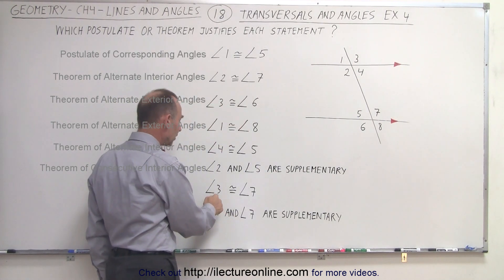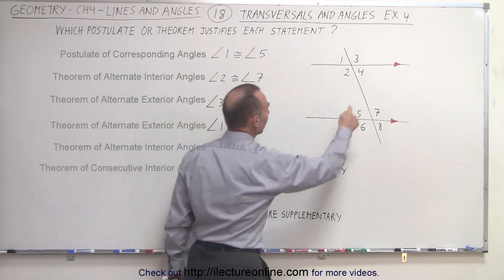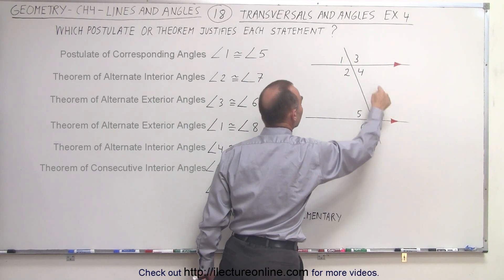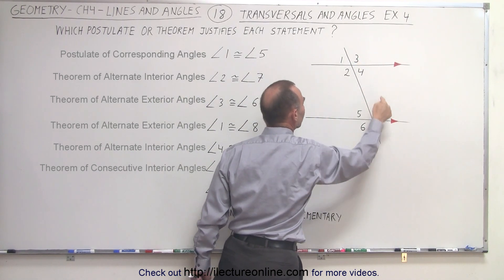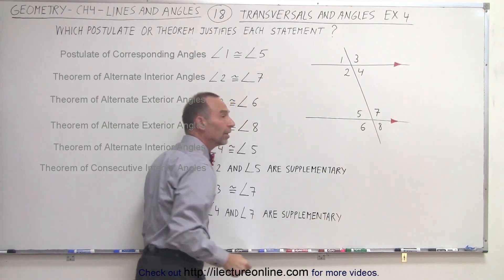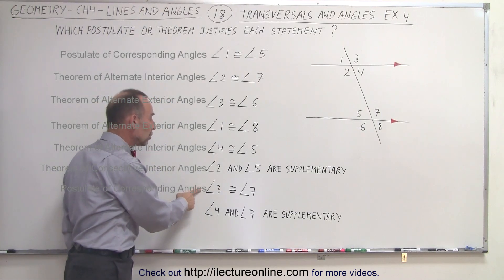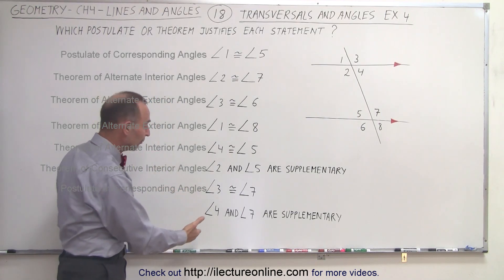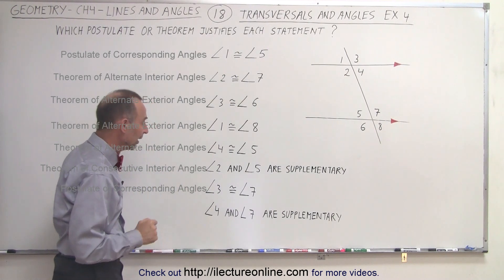Now we have angle three and angle seven — that's this angle here and this angle here. They are what we call corresponding angles, and by the postulate of corresponding angles we know that their measure must be the same, therefore they must be congruent.